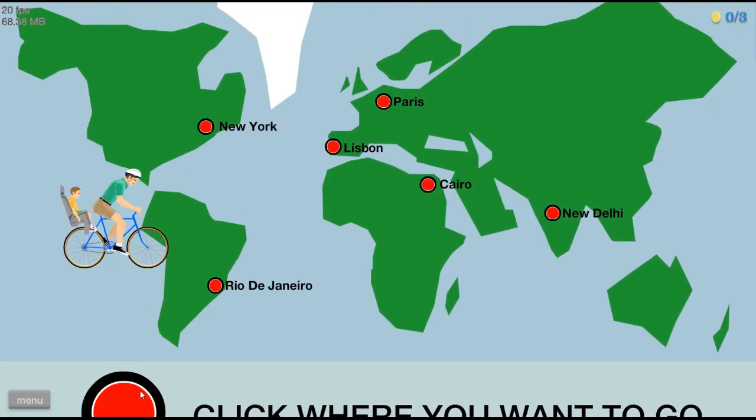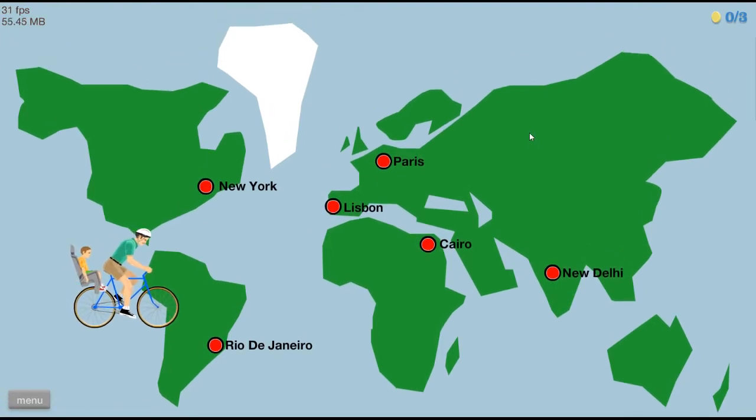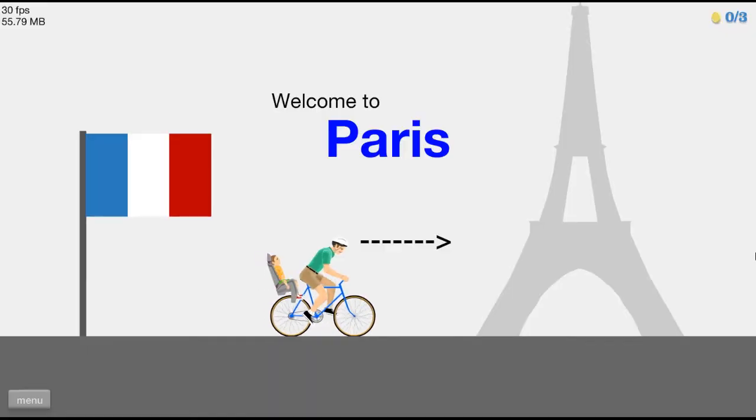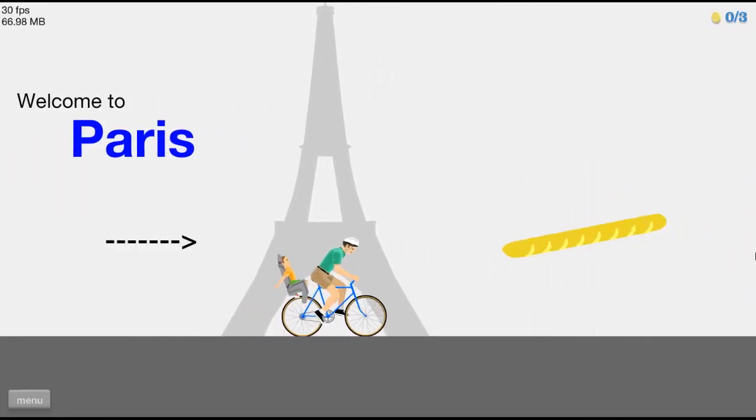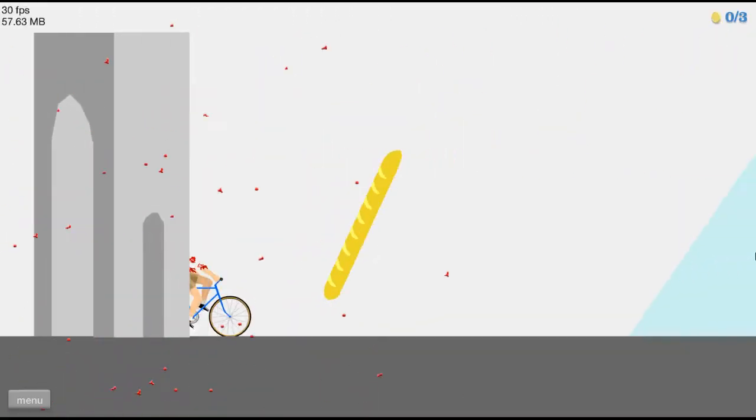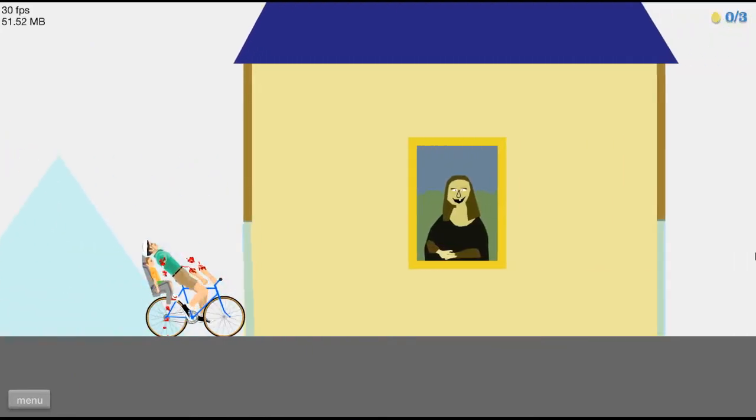All right, Daniel. We're going on an adventure. Where do we want to go? Let's see. Paris. Why not? All right, Daniel. We are here in Paris. Oh, look. Ow! I got my arms ripped off by bread.